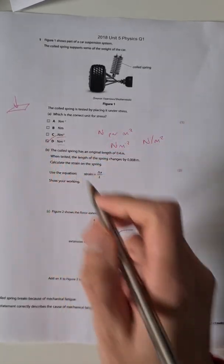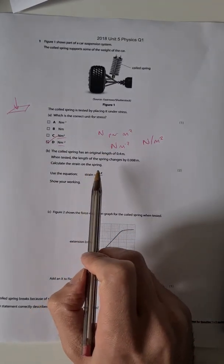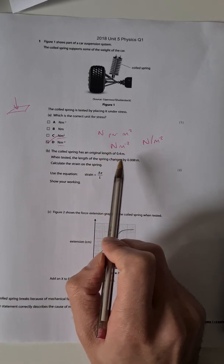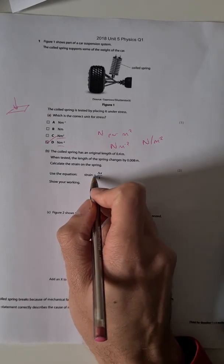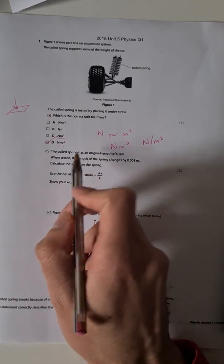Now we've got a calculation. You may not be familiar with this calculation but they give you absolutely everything you need to answer it. They tell you that strain equals delta x. You've got to work out what delta x is and L. You can see the cold spring has an original length of 0.4 meters.